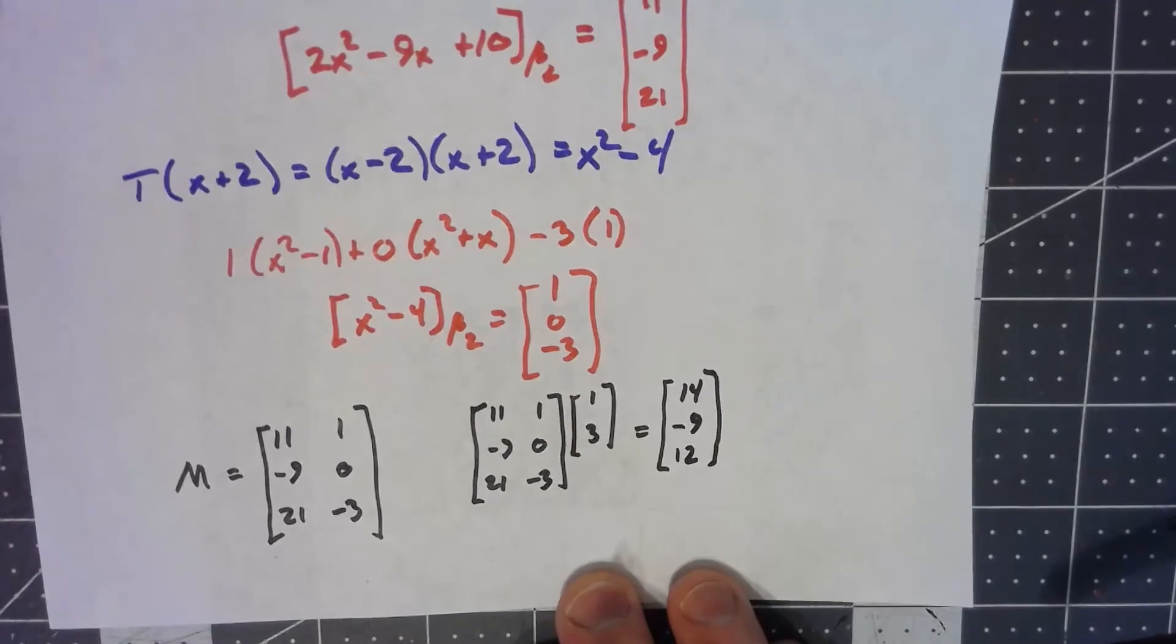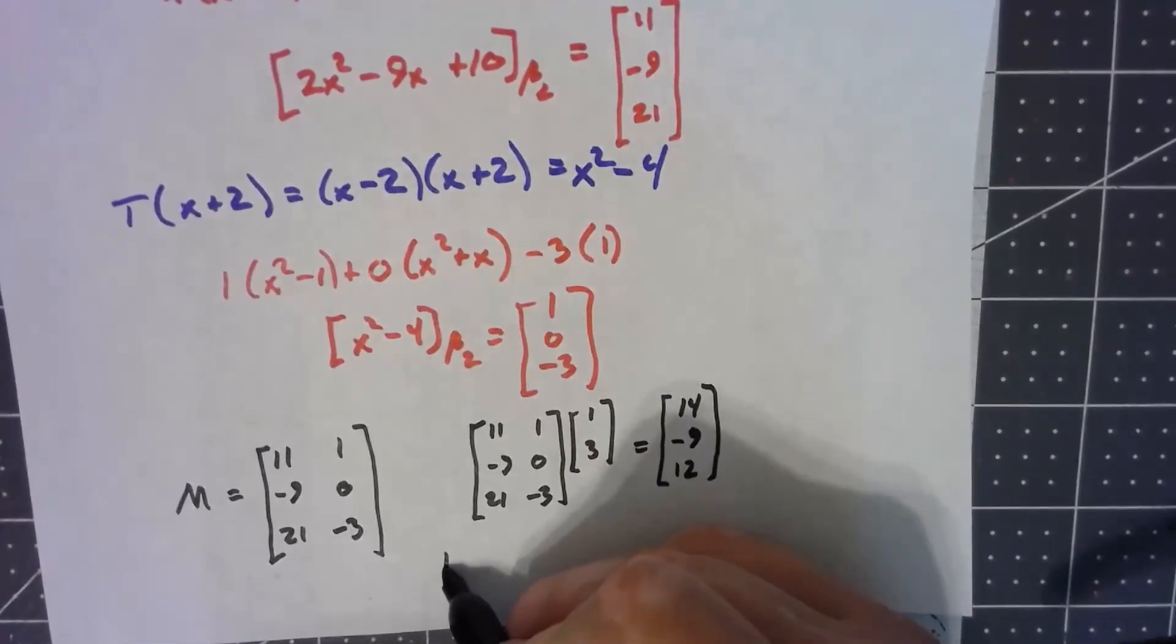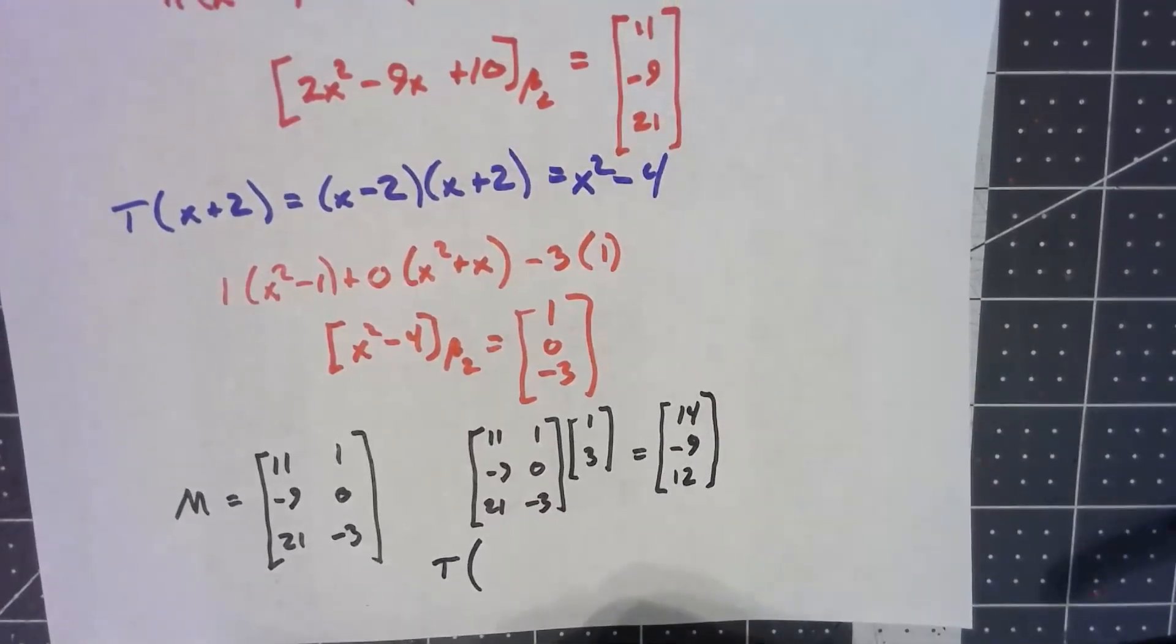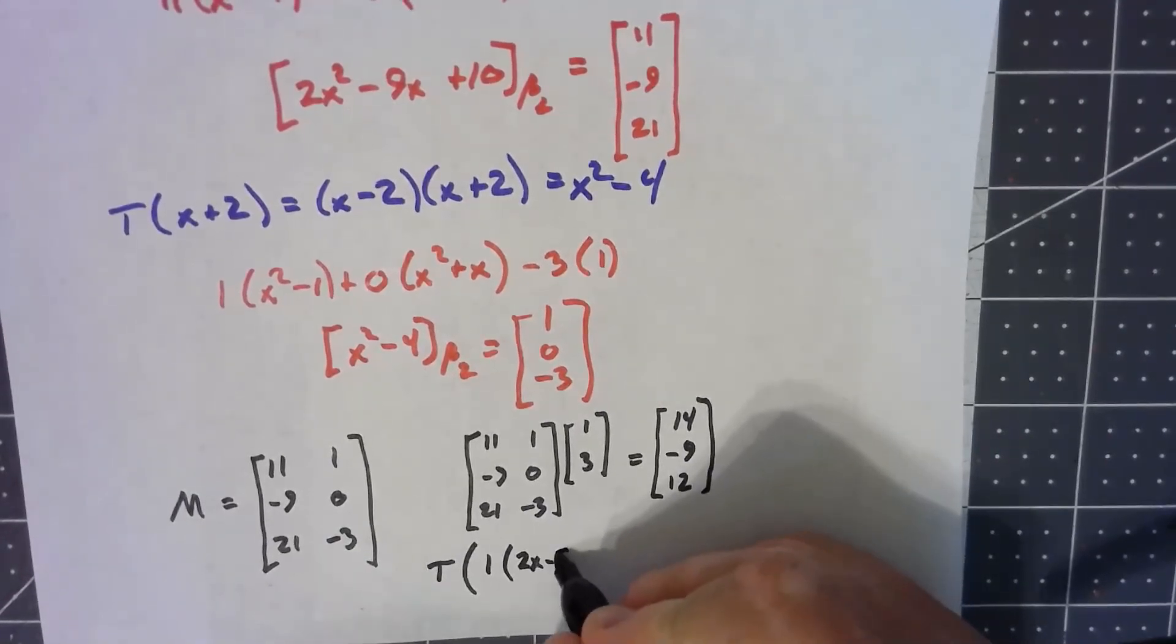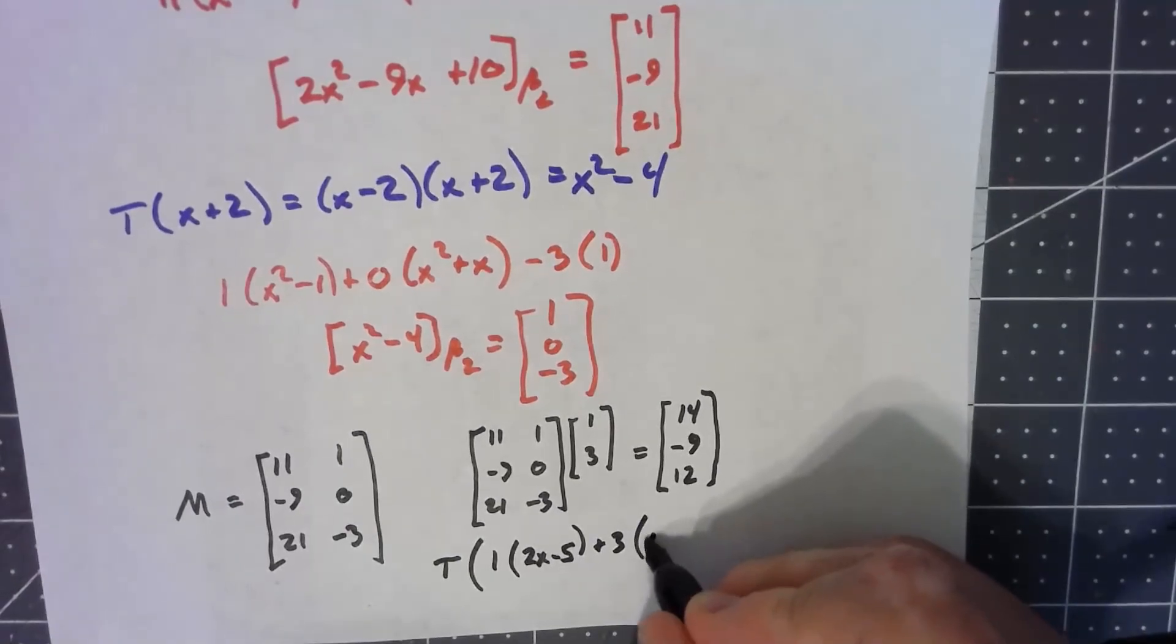What this says, in terms of the original transformation, is that the linear transformation—1, 3 was the coordinate vector—so it was 1 times the first basis element plus 3 times the second basis element.